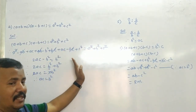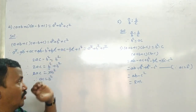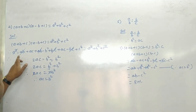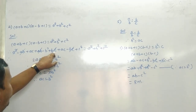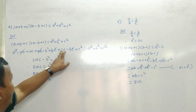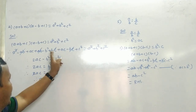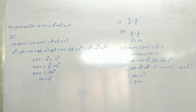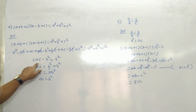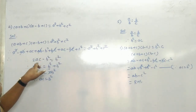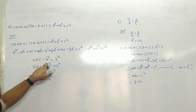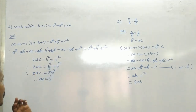C square यहाँ पर plus है, यहाँ भी plus है, तो C square minus हो जाएगा। उसके बाद देखो: minus AB plus AB cut, plus BC minus BC दोनों cut। अभी बचा यहाँ पर 2AC minus B square।